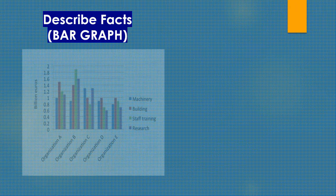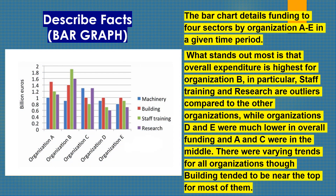Let's take a look at the sample answer. This is a bar graph — on the x-axis we have different organizations and on the y-axis we have billion euros. The bar chart details funding to four sectors by organizations A to E in a given time period. What stands out most is that overall expenditure is highest for organization B, with staff training and research as outliers. Organizations D and E were much lower in overall funding, while A and C were in the middle. Building tended to be near the top for most organizations.